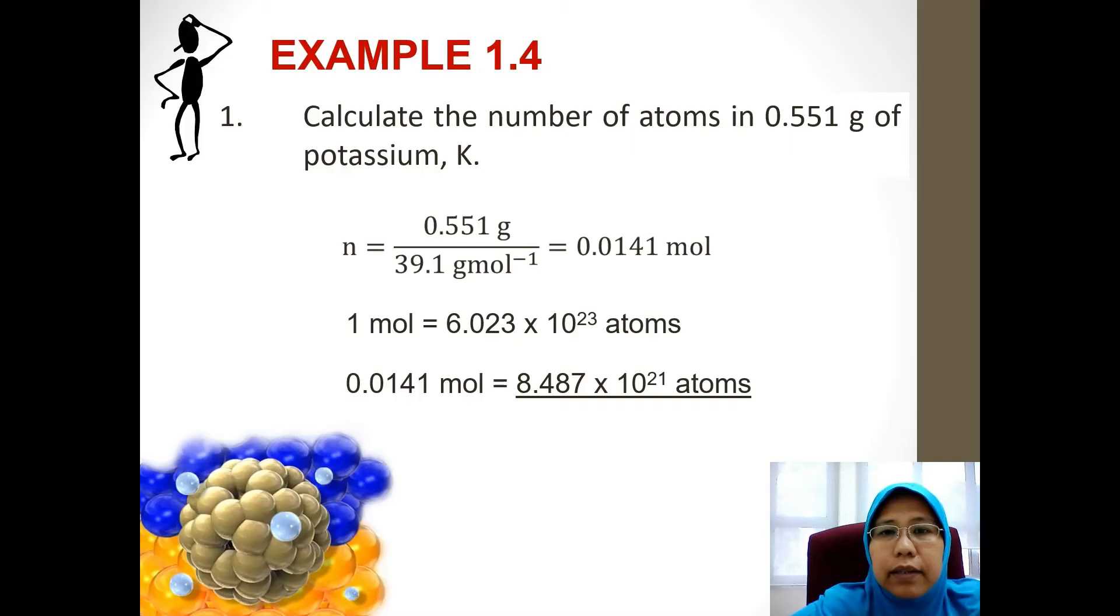Next you're going to get 0.0141 mole as the answer, and you're going to multiply it by the Avogadro number, 6.023 times 10 to the power of 23, to get the answer straight away, which is 8.487 times 10 to the power of 21 atoms. You're going to get two marks for this question.